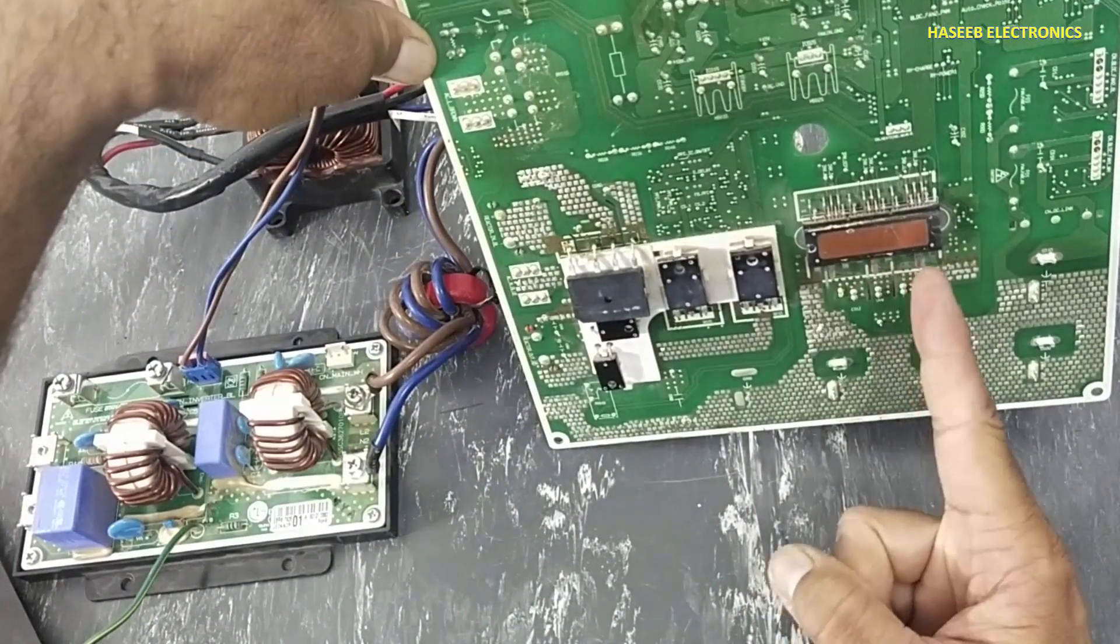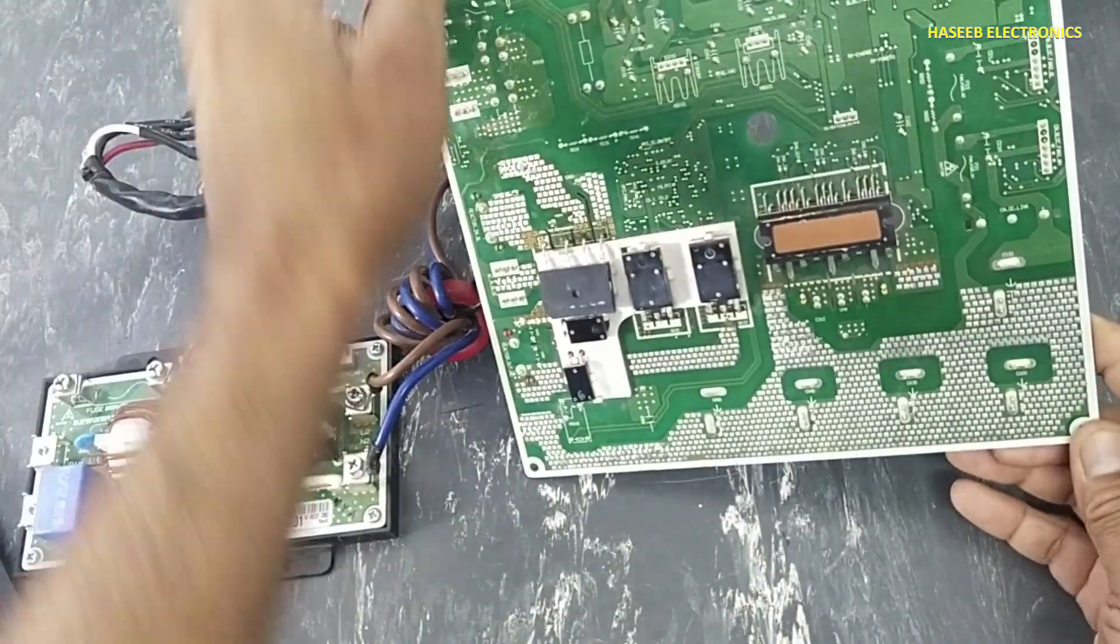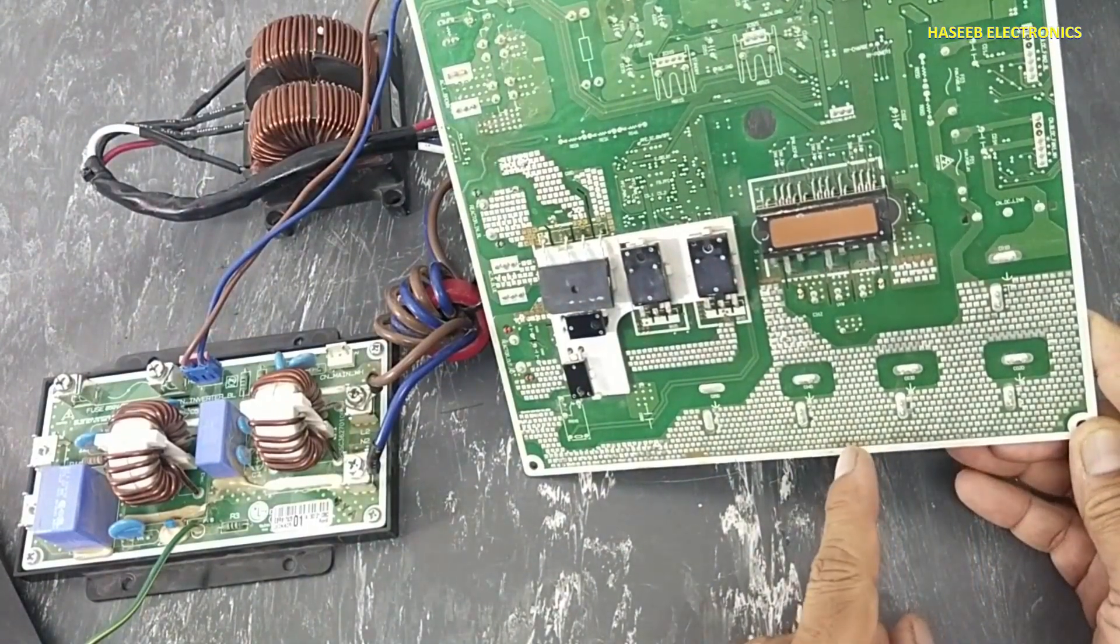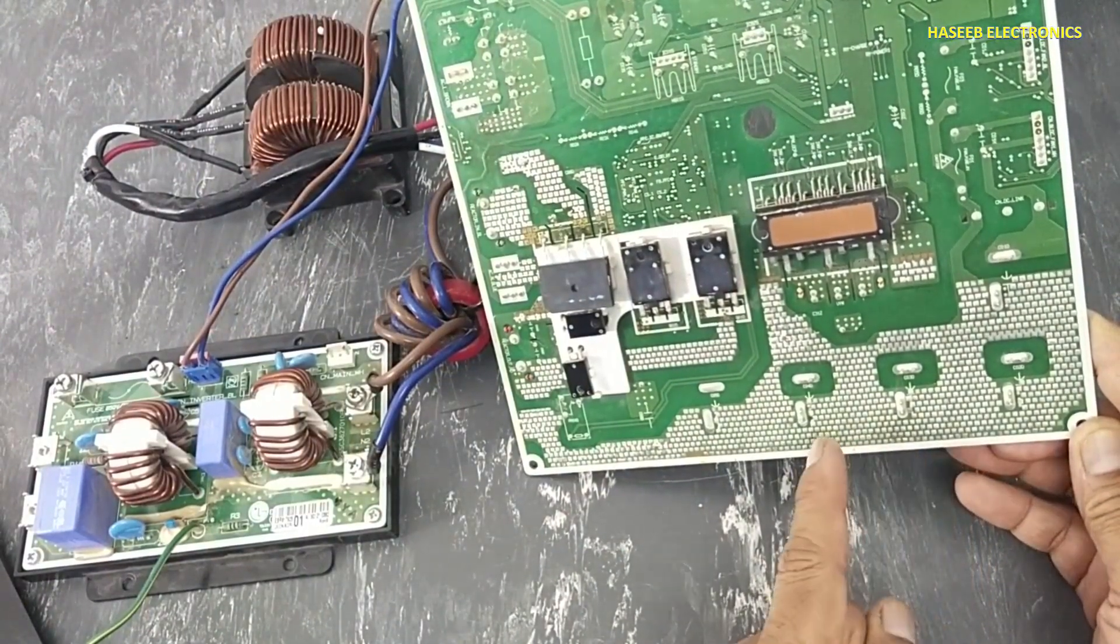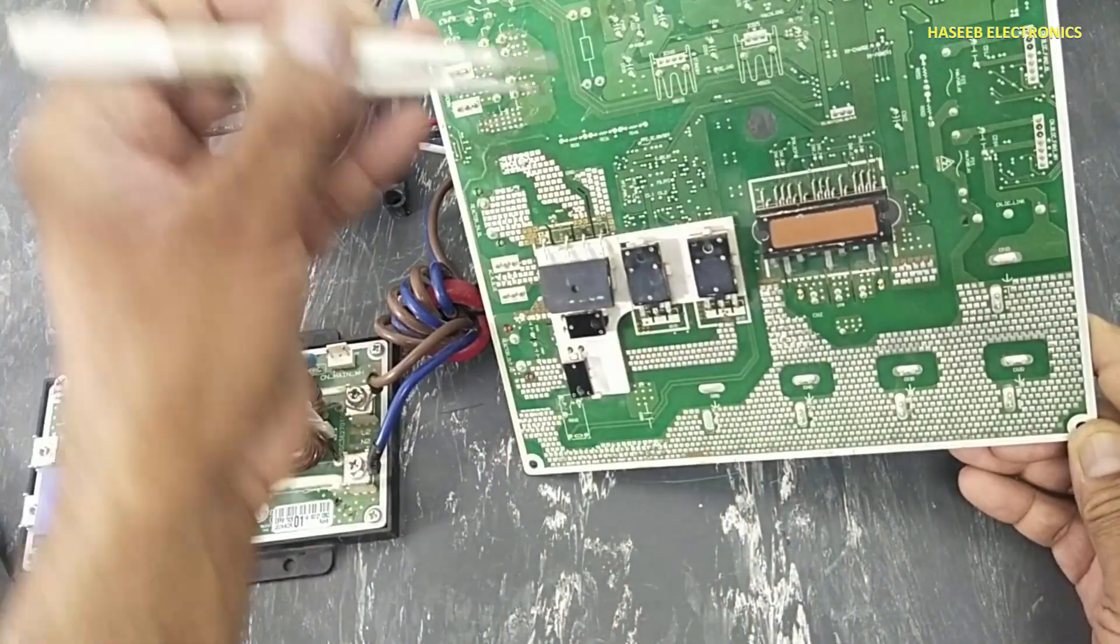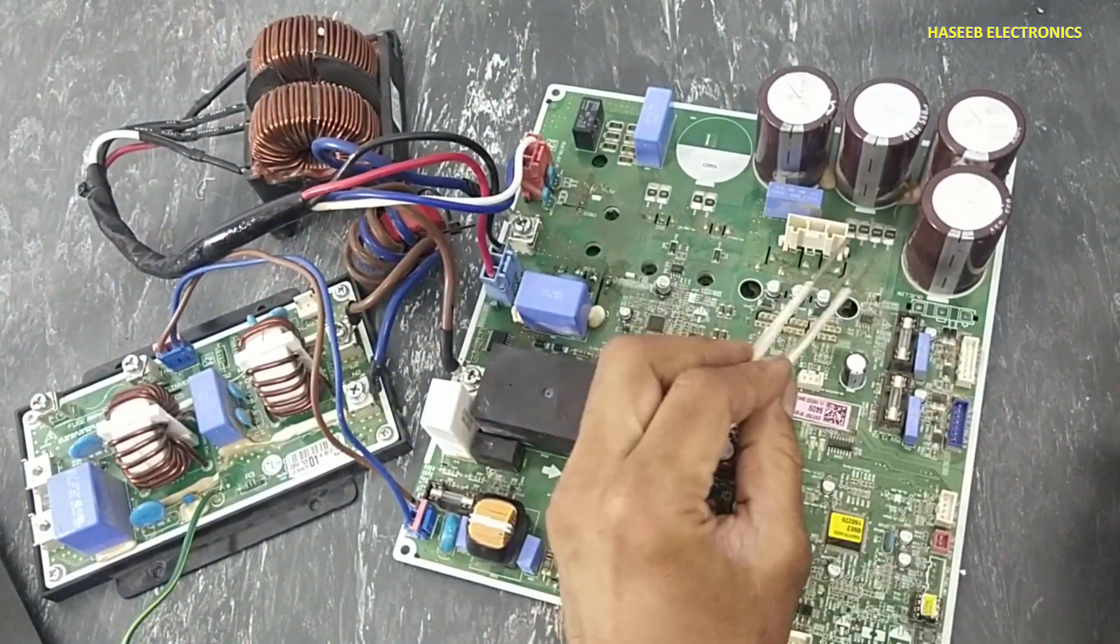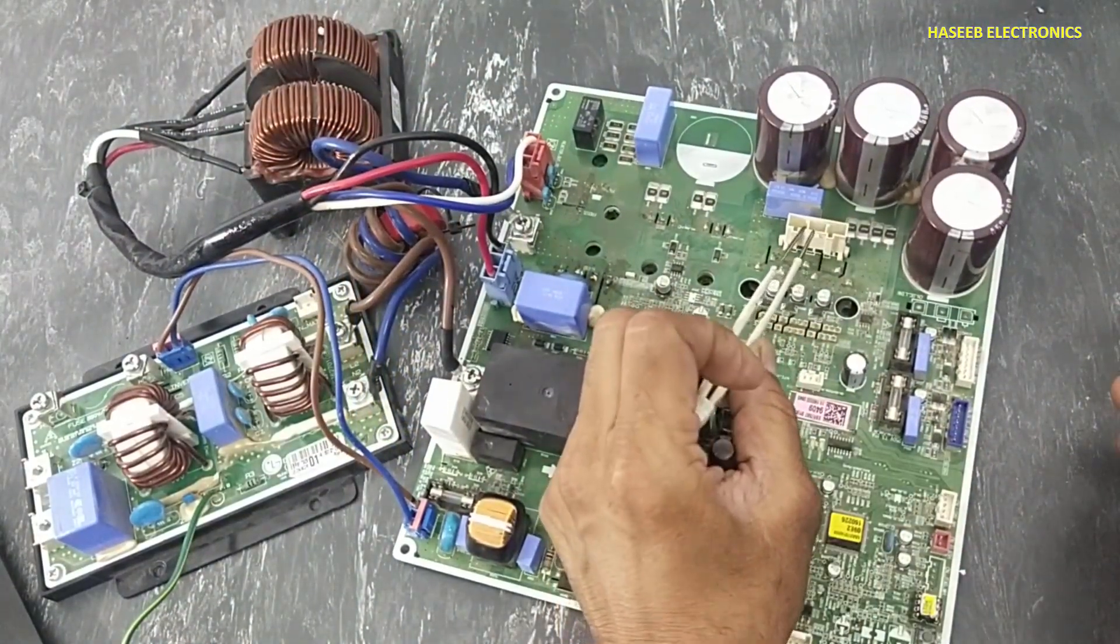Then there is IPM, intelligent power module. It will convert these voltage that are stored on DC capacitors - it will receive DC voltage then it will convert into AC three-phase signal here, UVW signal for compressor.